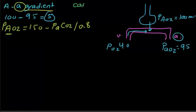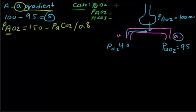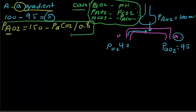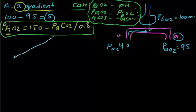In an exam question, they will give you the partial pressure of arterial O2, alveolar O2, HCO3, pH, and PCO2. You might get confused by all these numbers, but they are given for two reasons: first, to determine metabolic or respiratory alkalosis or acid-base problem, and second, to ask you to calculate the A-a gradient.